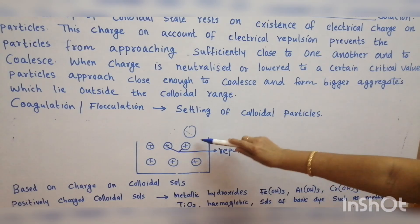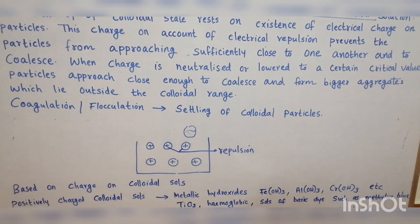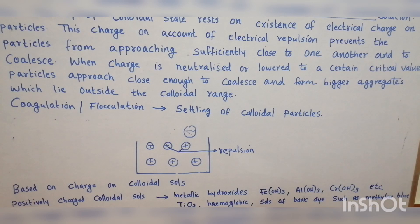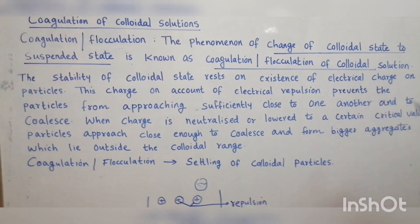The colloidal particle has a repulsive force. When a negative charge comes closer to the colloidal particle, there is neutralization or lowering of the charge. This helps the colloidal particles come closer and become a bigger mass, resulting in a change from the colloidal state to the suspended state. This process is called coagulation or flocculation of colloidal solution.